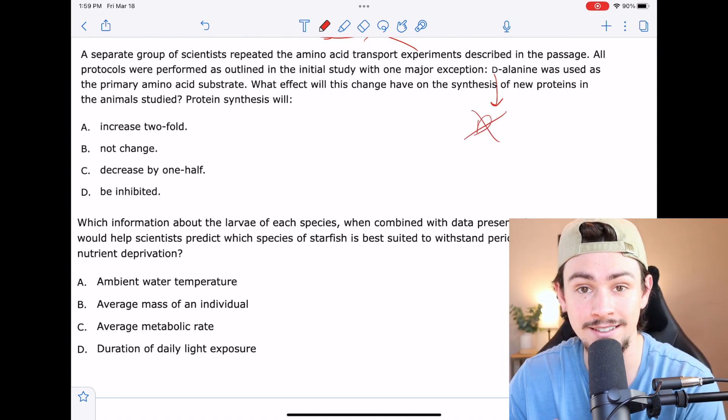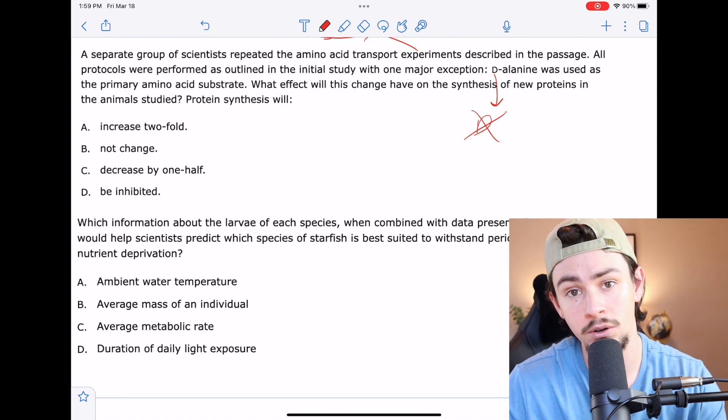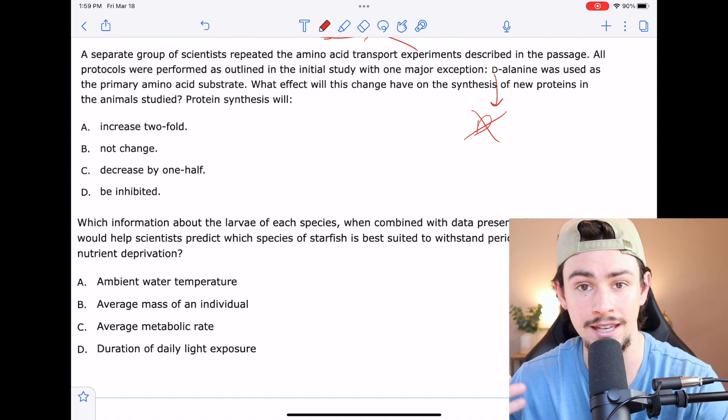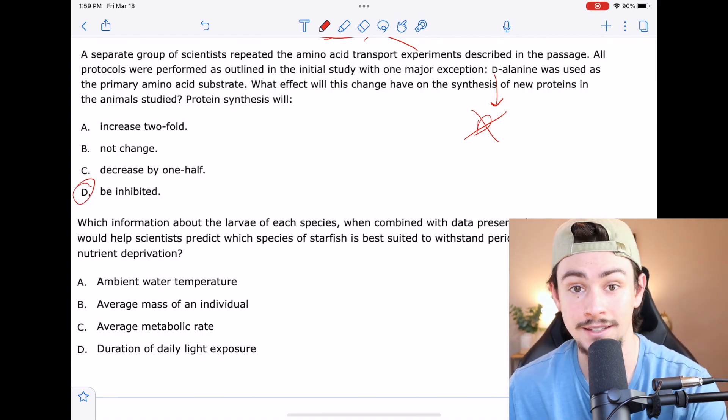That means when it ran into D-alanine, it would stop. So we're going to completely inhibit protein synthesis because our protein will not be able to use any of the alanine that's available. So the correct answer here would be D. It's inhibited.